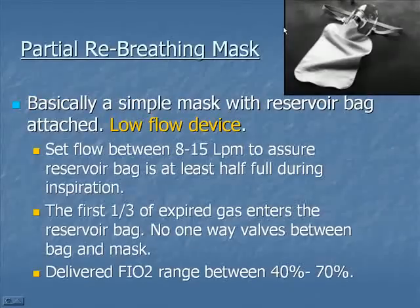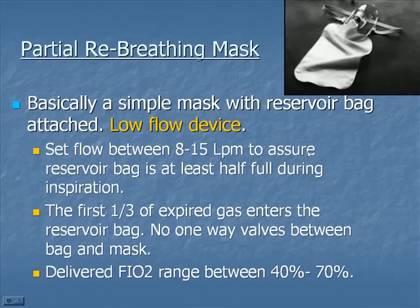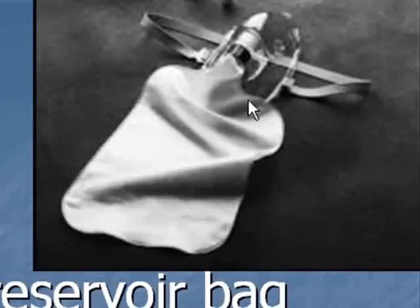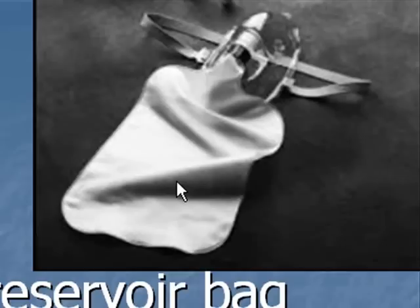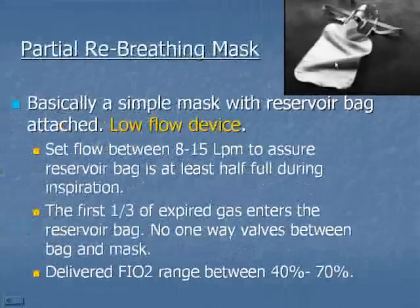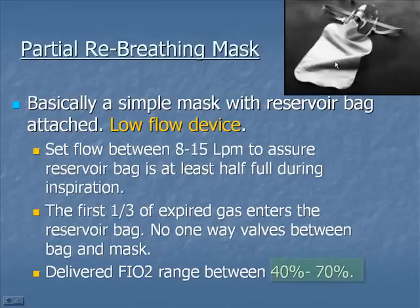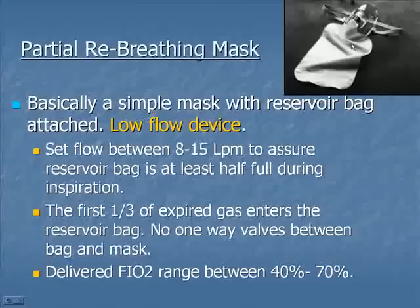The partial rebreather mask is also one we don't use a lot. It's a low flow device — you need to set the flow somewhere between 8 to 15 liters per minute to ensure the reservoir bag is at least half full during inspiration. There is no one-way valve between the mask and the bag, so the patient actually exhales some carbon dioxide back into the bag. This gives it very limited use, with a delivered FiO2 range somewhere between 40% and 70% oxygen.